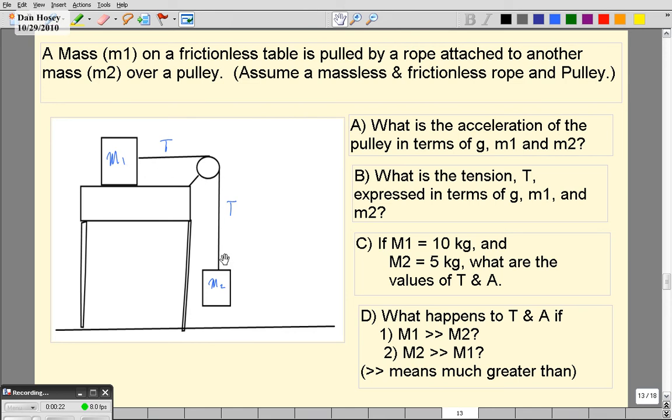The second block has gravity acting on it, or weight force and a tension. The first one just has the tension and the rope pulling on it. It's important to notice that the tension is the same everywhere within. Now with these kinds of problems, the most important thing to do is to identify the objects, m1 and m2, and to create a coordinate system that's convenient.